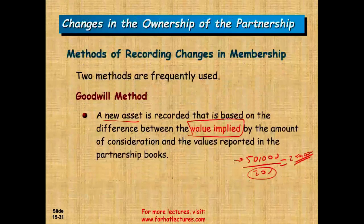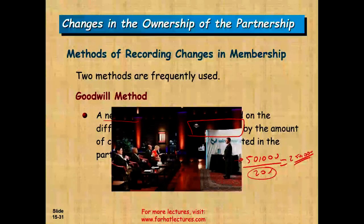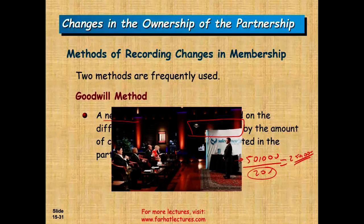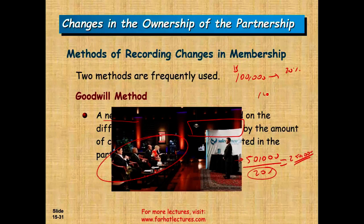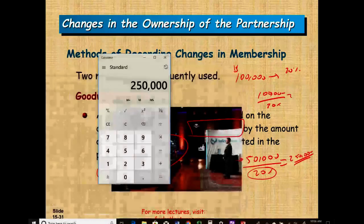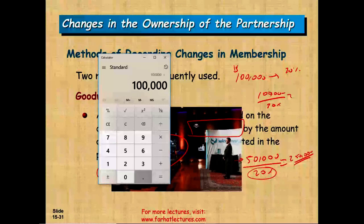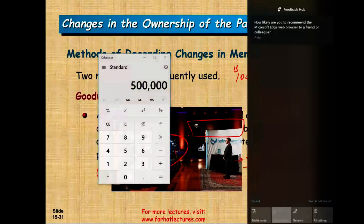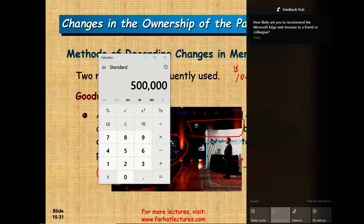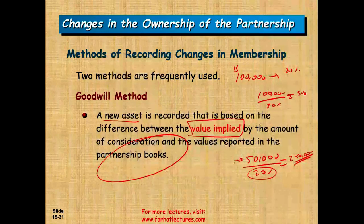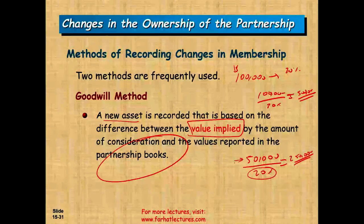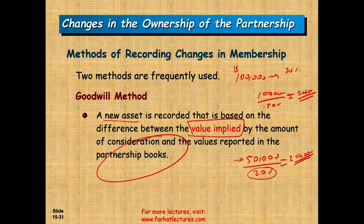If you watch Shark Tank on CNBC, when an entrepreneur says 'give me $100,000 and I'll give you 20% of my business,' the investors immediately grab their calculators and take $100,000 divided by 20% to find how much that individual values their business. If we take $100,000 divided by 0.2, the business is worth half a million. That's how they start the negotiation — they're finding the implied value.